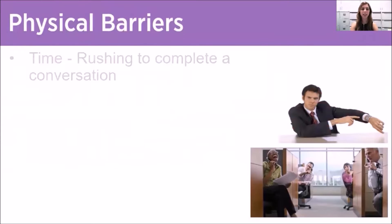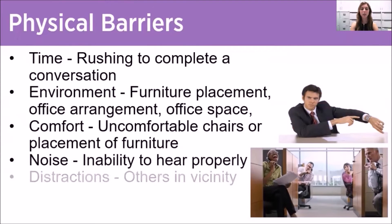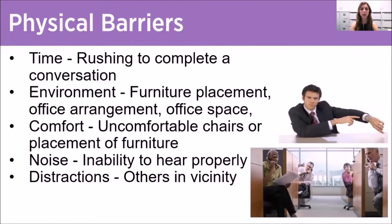The first type is physical barriers. This ranges from time pressures, such as rushing to complete a conversation, and environmental issues such as furniture placement, office arrangement, and office space that can be clunky and difficult to move around, causing discomfort. You may also have uncomfortable chairs or distracting pieces of furniture placed in odd places. Noise also impacts on the level of ability to hear people properly, and distractions such as having other people nearby who are quite talkative and loud can distract you from the conversation.